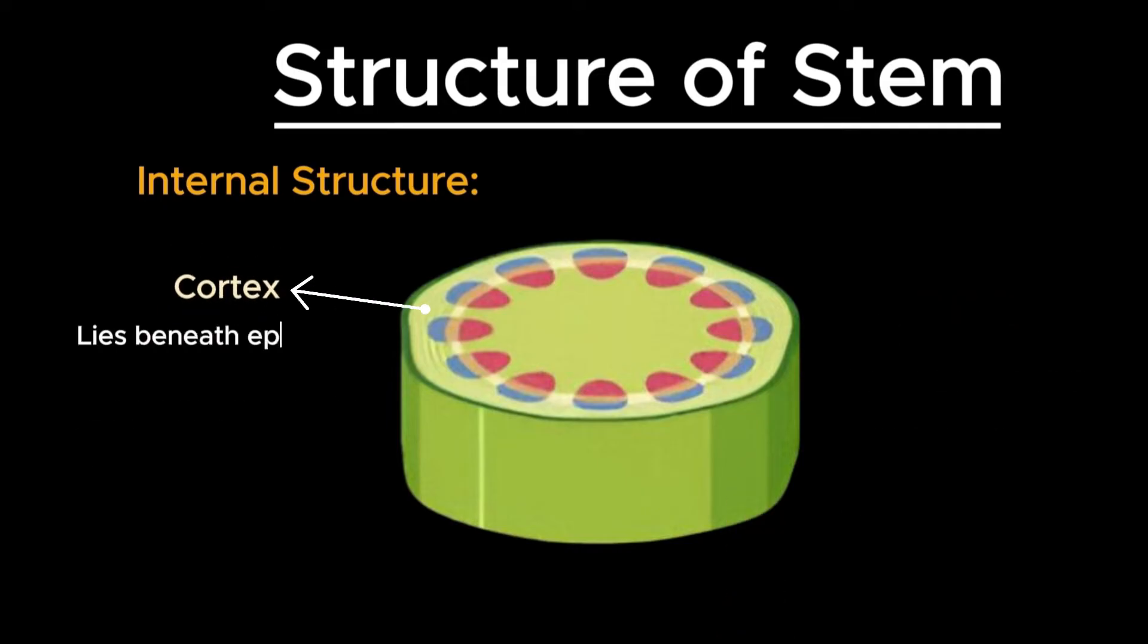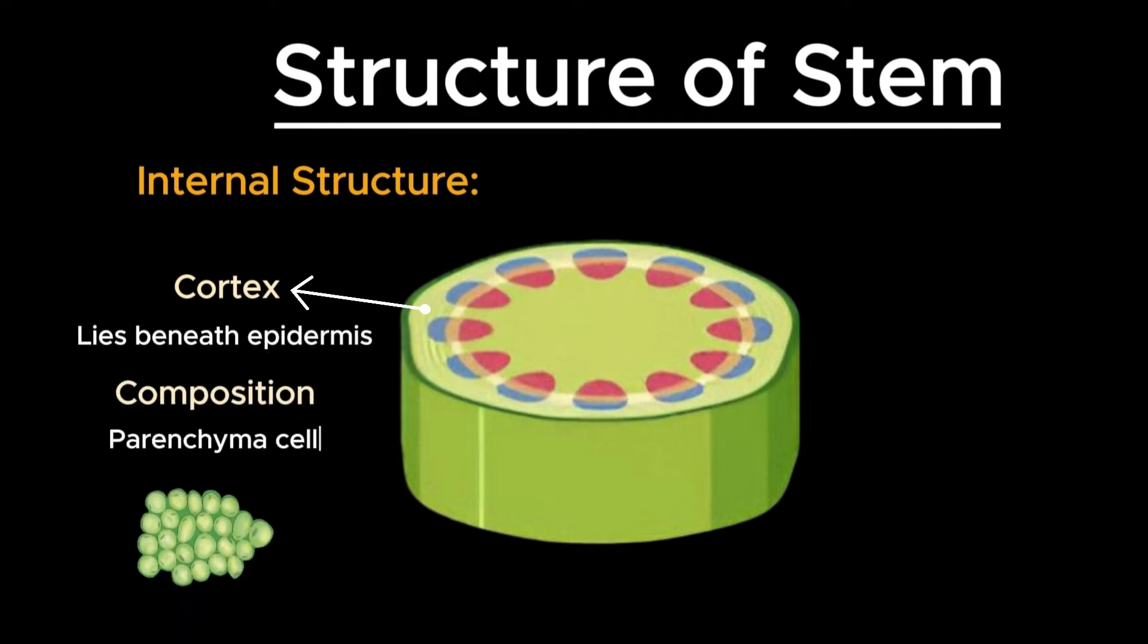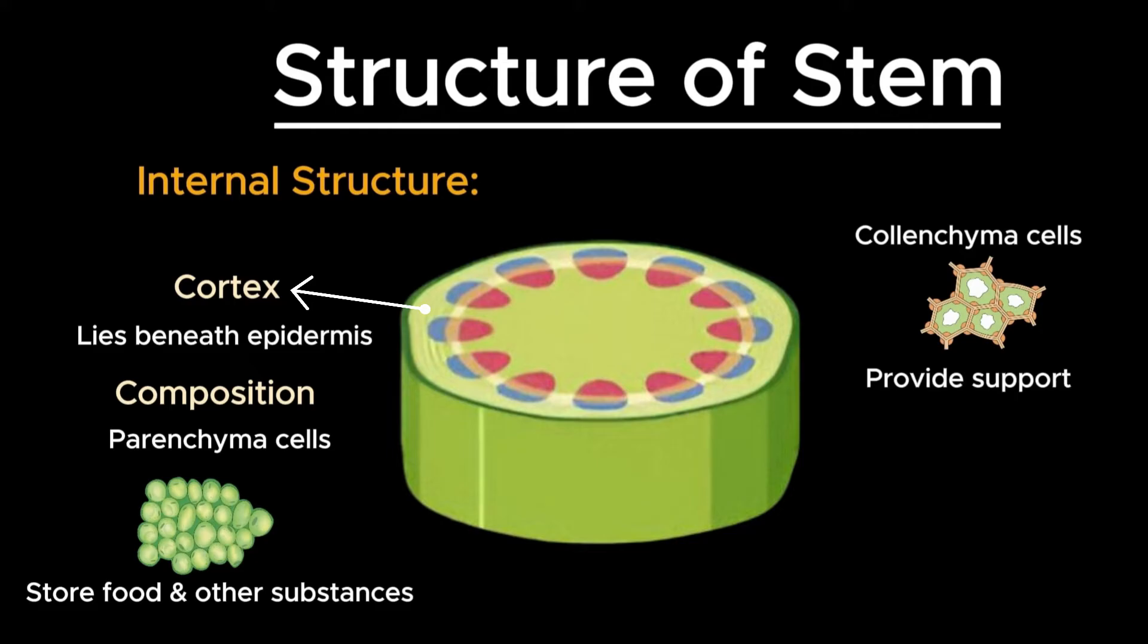Beneath the epidermis lies the cortex, a region composed of parenchyma cells that often store food and other substances. The cortex may also contain collenchyma cells that provide additional support, especially in young stems, and sclerenchyma cells that contribute to rigidity.